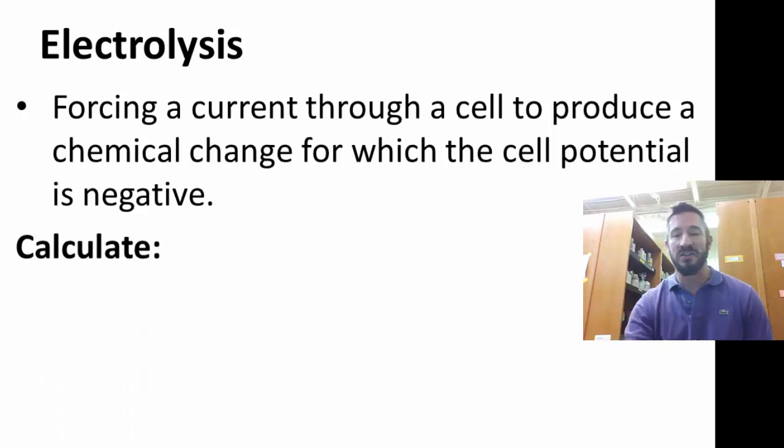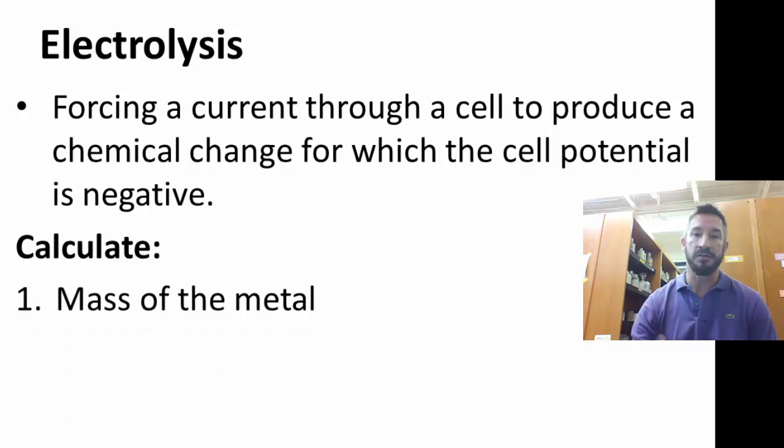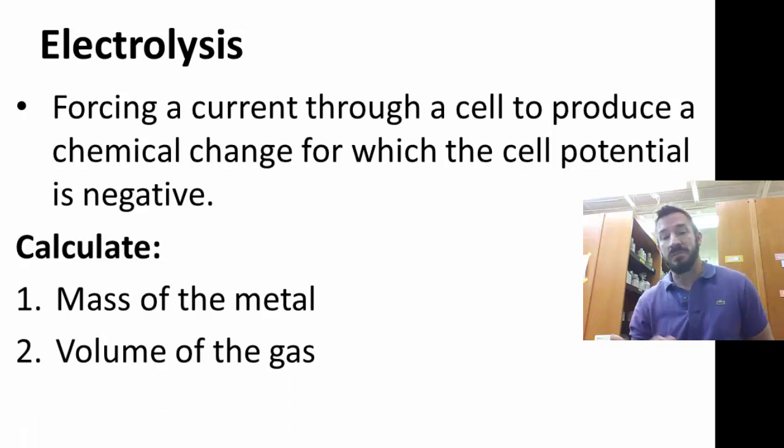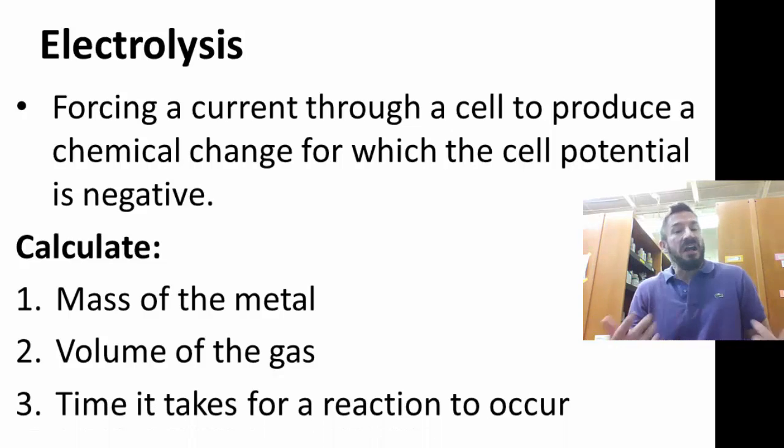And to calculate things that we're going to calculate, we're going to calculate the mass of the metal. We might plate a metal or produce a metal. Next thing, the volume of the gas. Sometimes there's a gas produced in these reactions. And finally, another thing we might calculate is the time it takes for this reaction to occur.